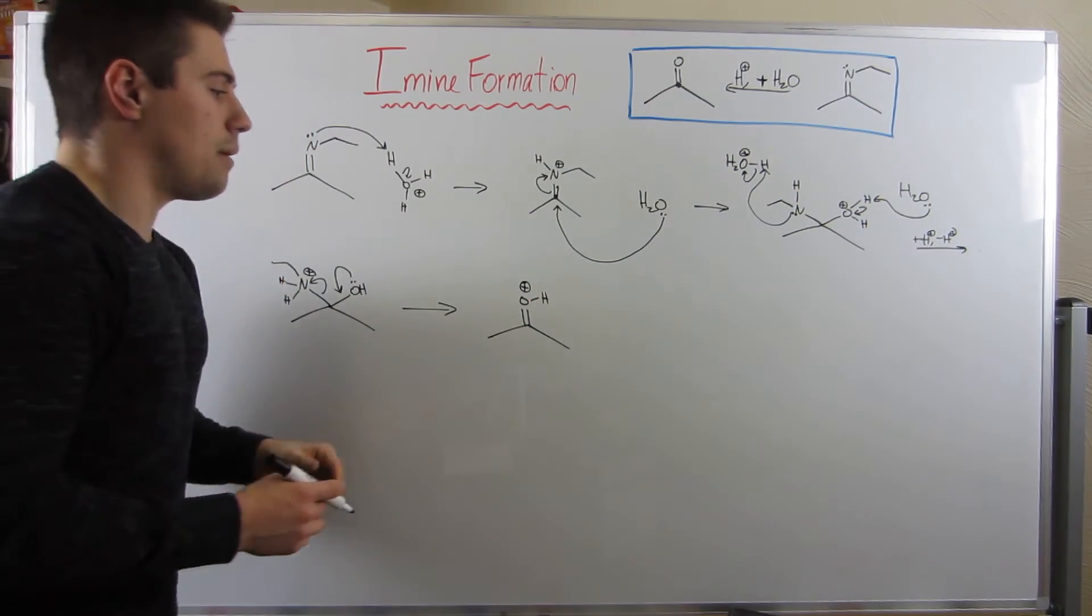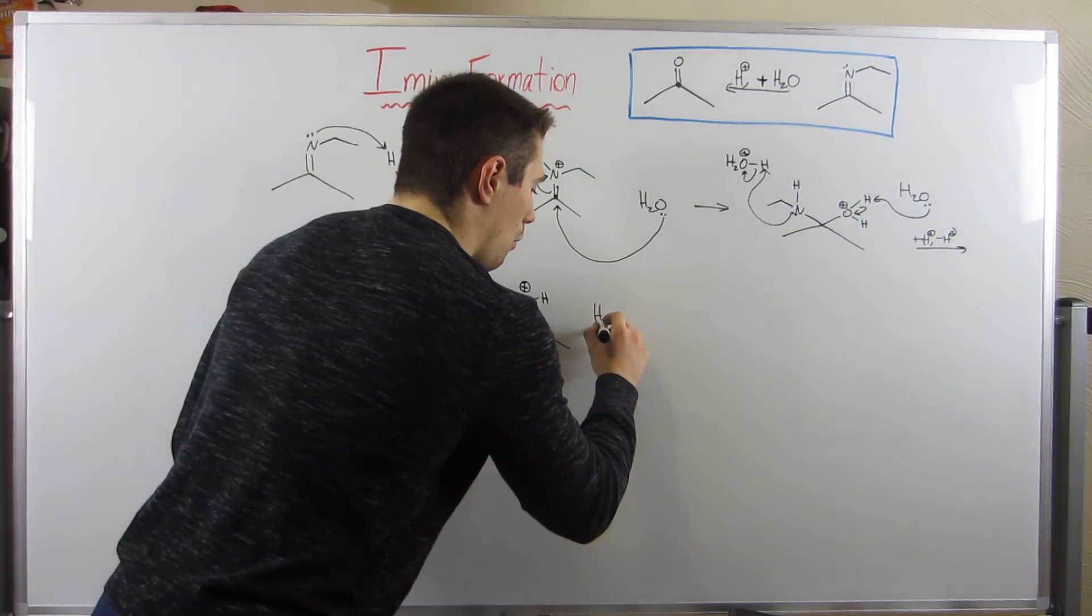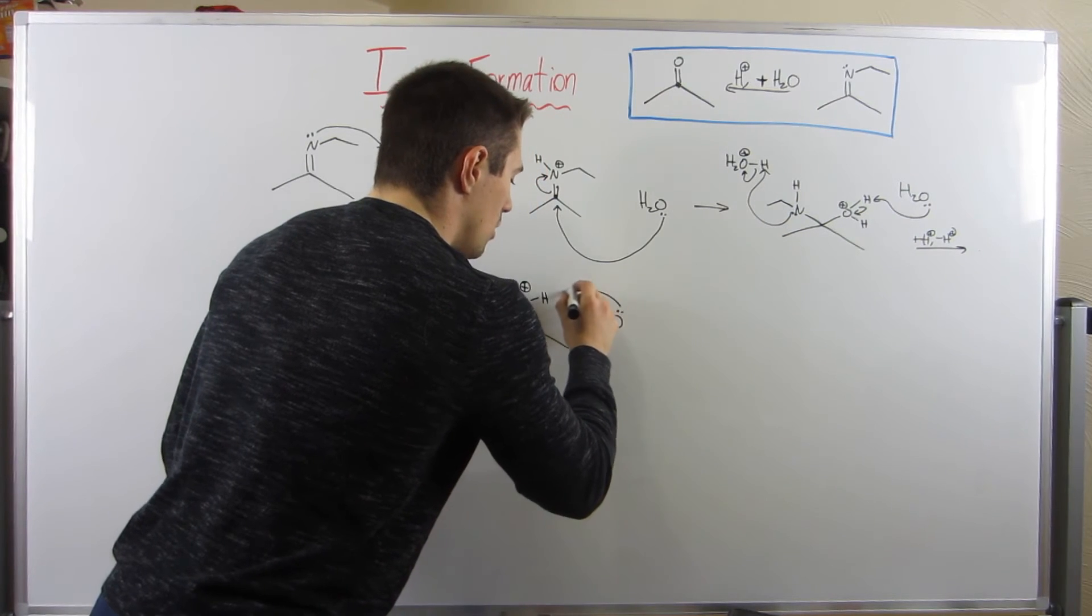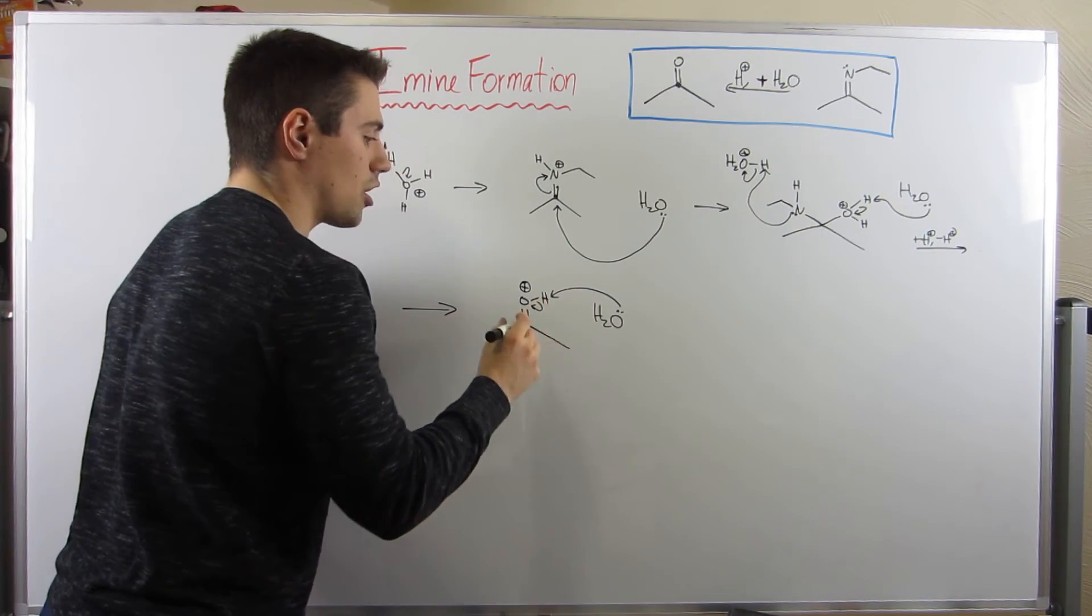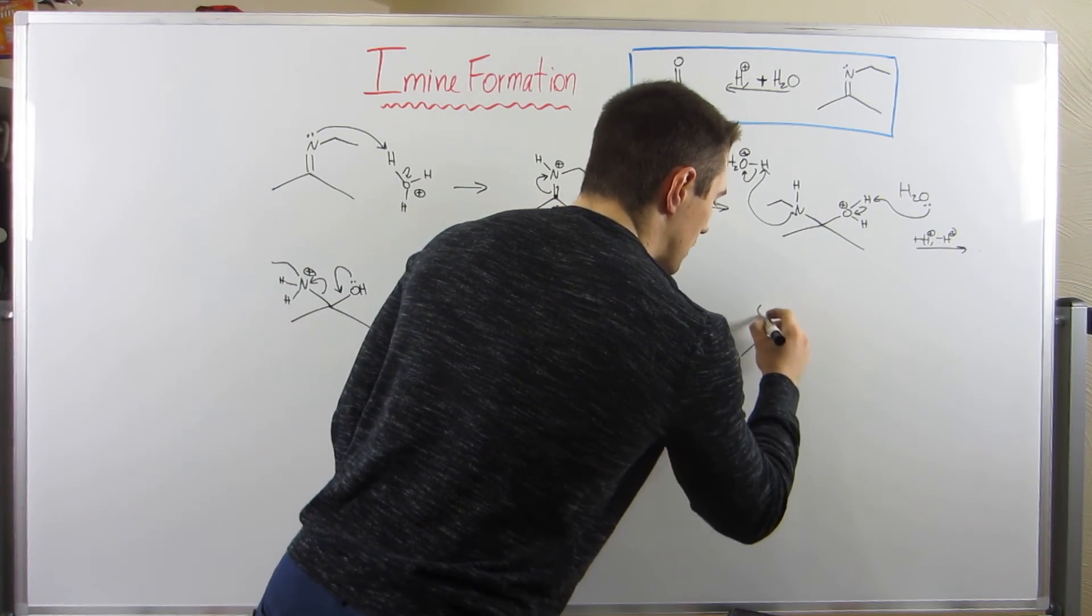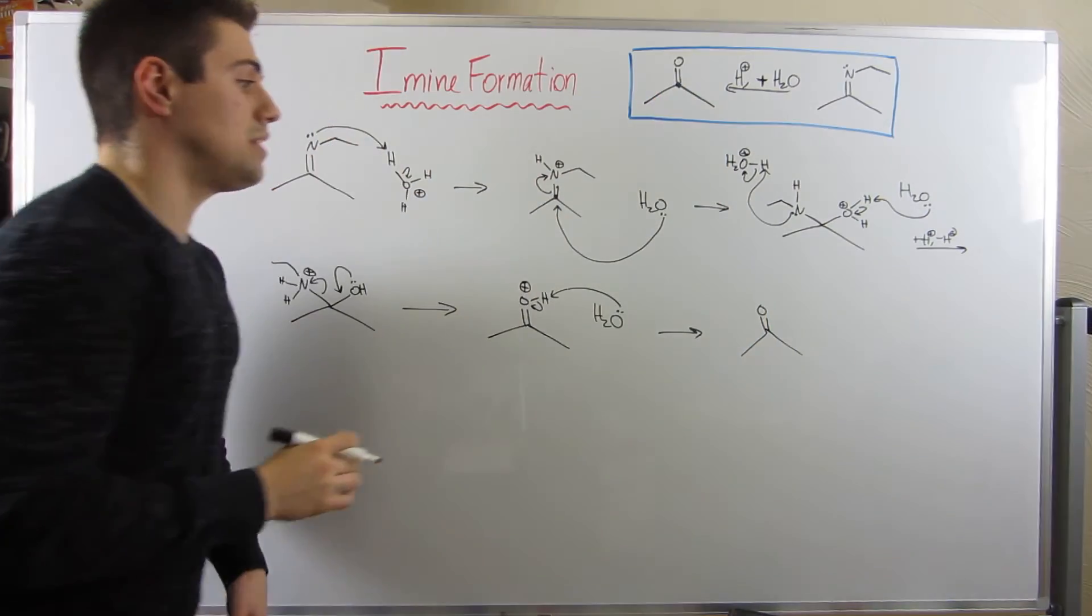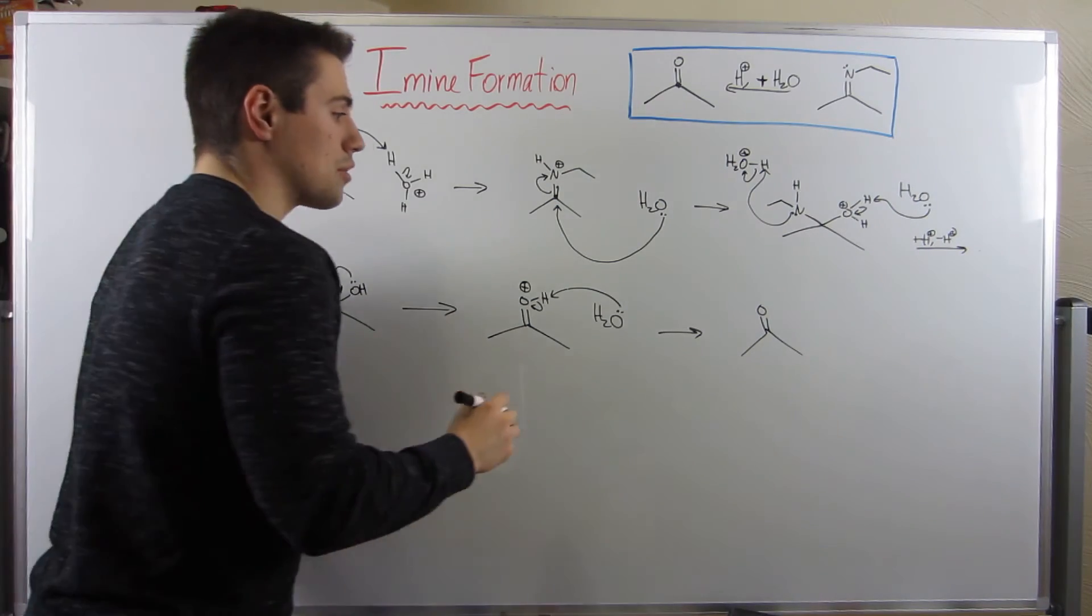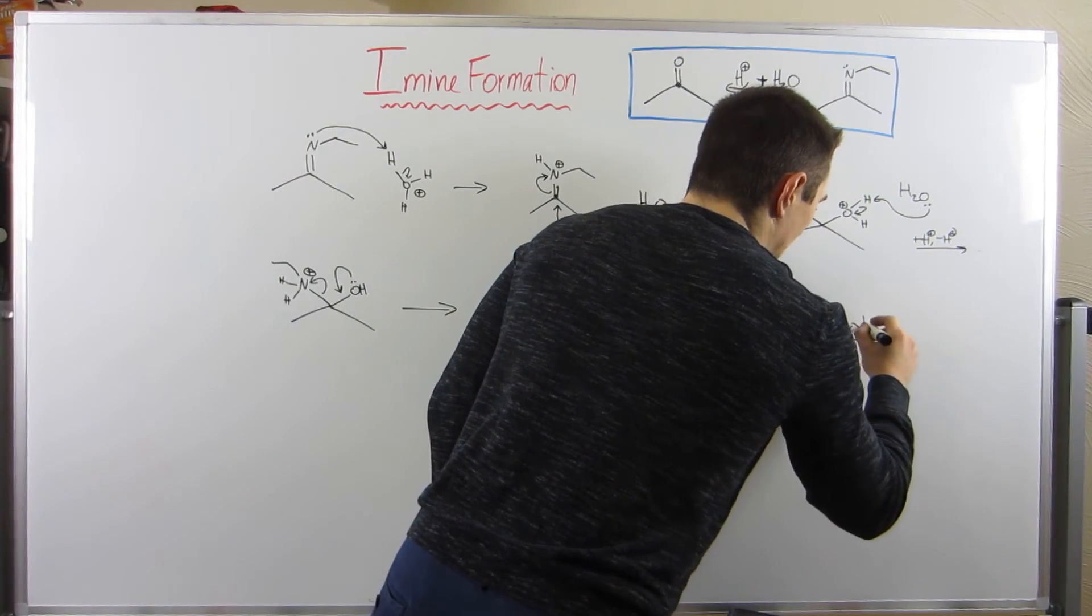So that means we now have our protonated carbonyl, so close to the finish line. All we need to do is clean him up. Let's just bring a water molecule in, grab the hydrogen, dump the electrons onto the carbonyl oxygen. We can then fist pump in the air because we've reproduced our carbonyl and we've also recovered that catalytic acid.